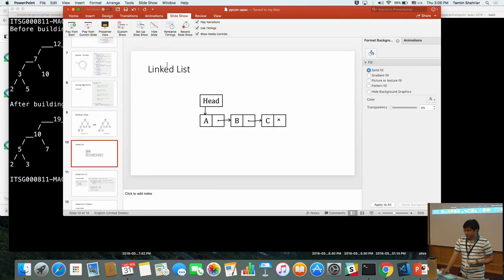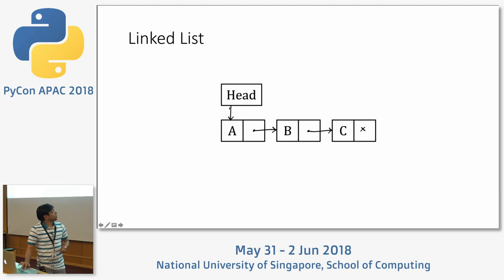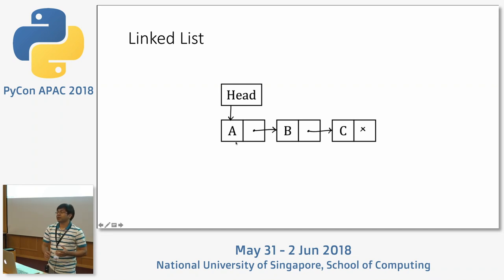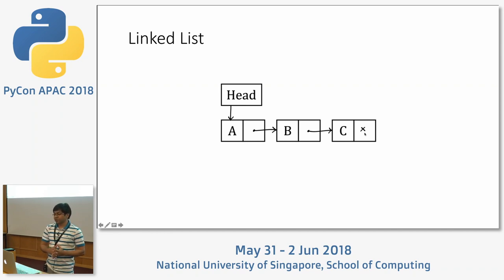The last example I would like to show is a linked list. In a linked list, we have a head pointer and there are nodes. Here I see three nodes and each node has two parts: one is data and the other is a pointer to the next item. In the third node where the data is C, there is a cross sign — it doesn't have any more pointers, so the linked list ends there.